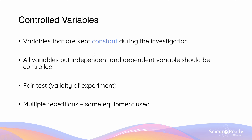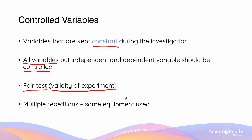Controlled variables are variables that are kept constant during the investigation. This means that all variables other than the independent and the dependent variable should remain controlled, and it's important to note that it is all variables except for those two. This is done to ensure that our test is going to be fair, and this is with regards to the validity of the experiment. An example of a controlled variable would be ensuring that the same equipment is used across multiple repetitions of the same type of test.